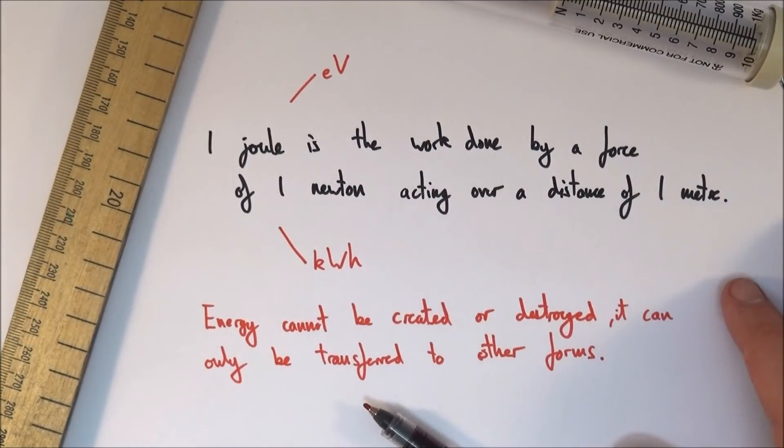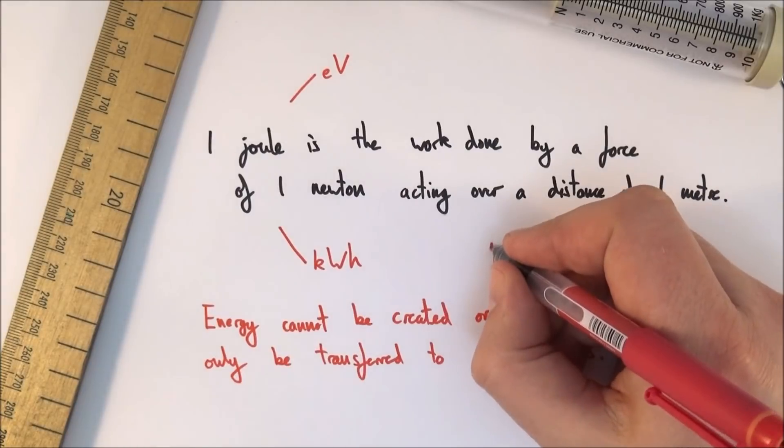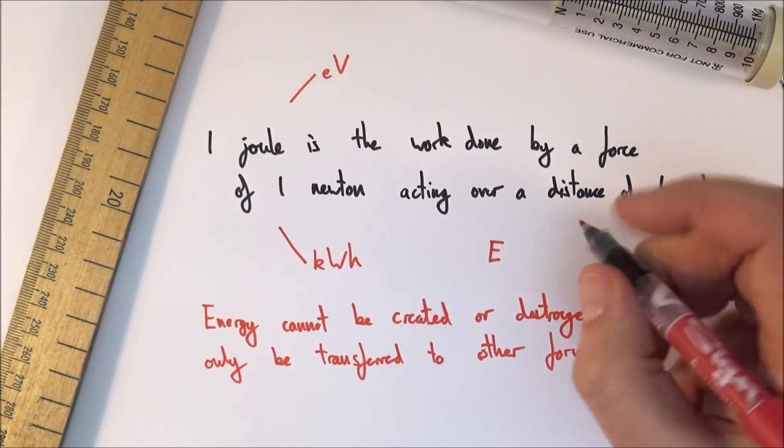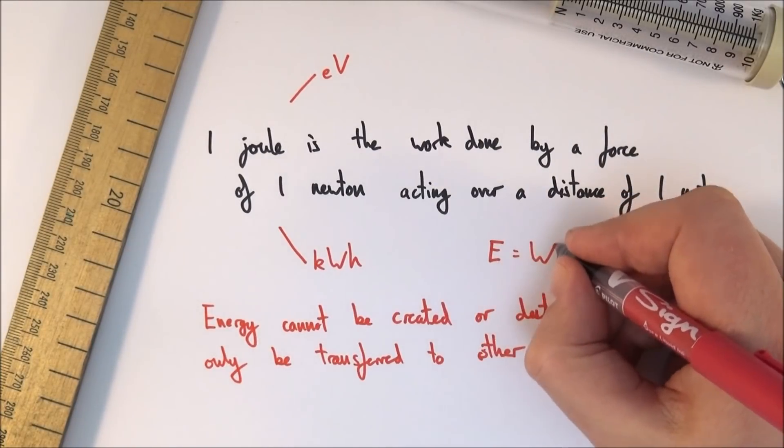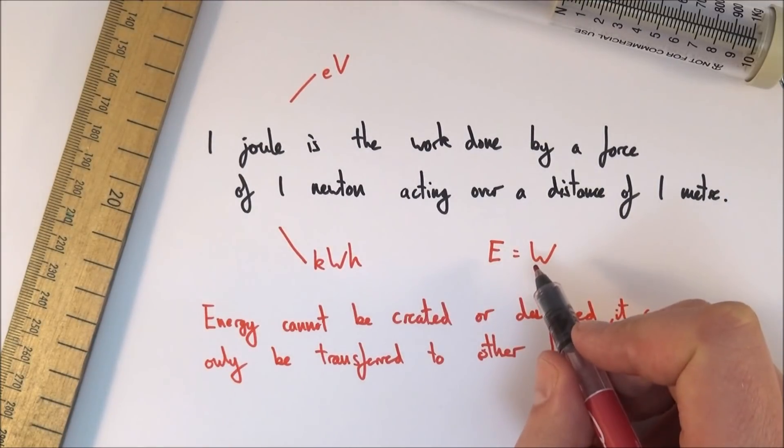But for most of the time in Newtonian physics, the energy transferred to an object is the same as the work done on that object. So we can use E for the energy and W for the work done.